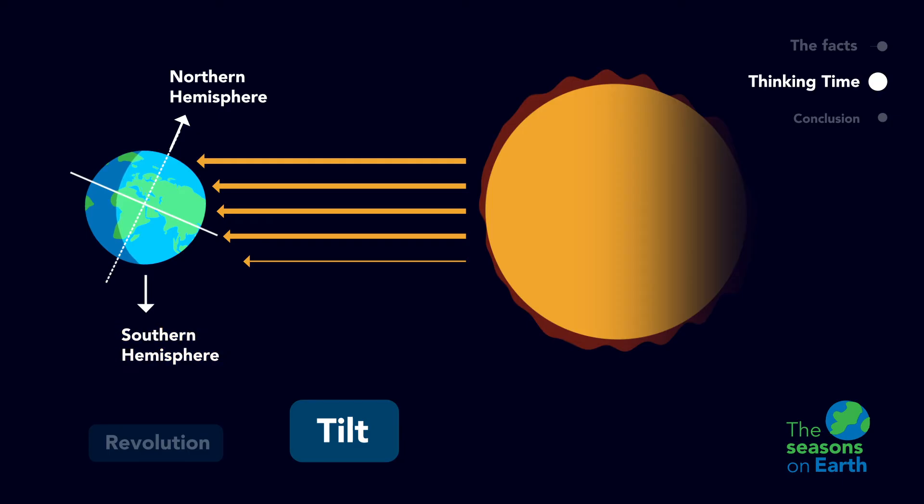At the same time, the southern hemisphere is tilted away from the sun, so it only gets indirect sunlight. What type of temperatures would you predict the southern hemisphere is experiencing when it receives indirect sunlight? This angle of sunlight won't warm up the earth's surface as much as direct sunlight, so this half of the planet will be colder and will experience the winter season.